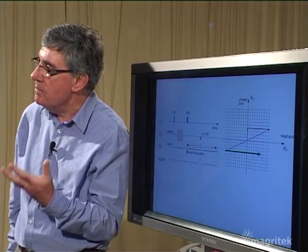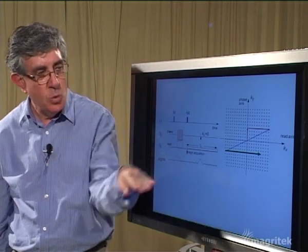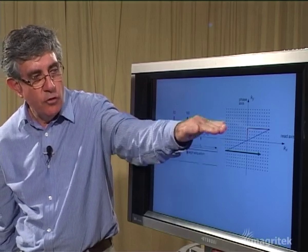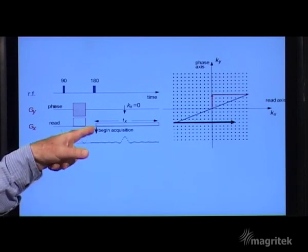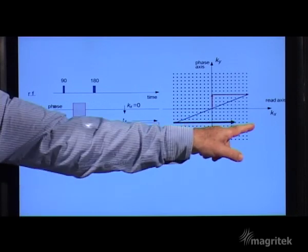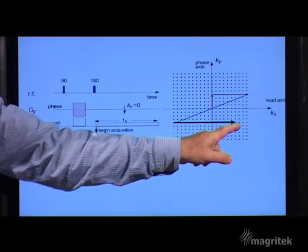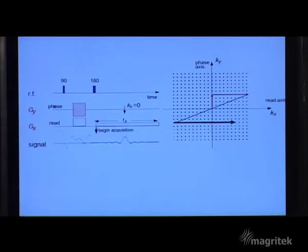We give particular names to these gradient pulses. This one that moves us to different lines before we acquire our signal is known as a phase encoding gradient. Whereas the gradient we apply when we read out the signal along the line of this matrix here is known as a read gradient.